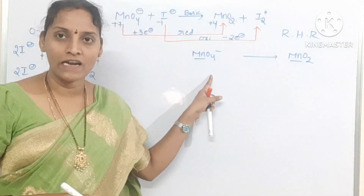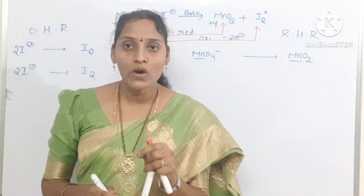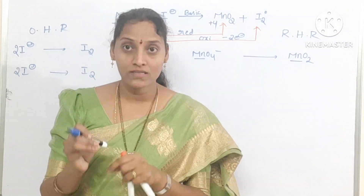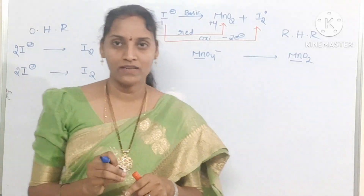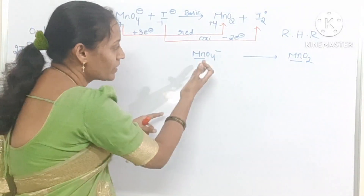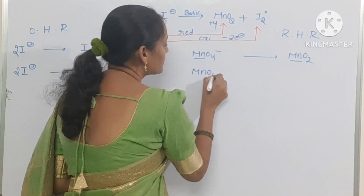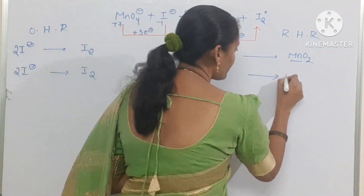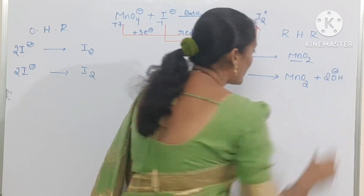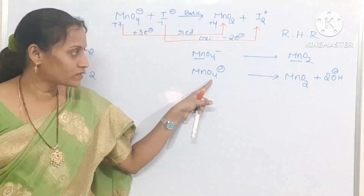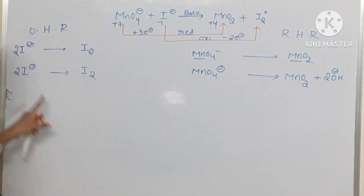In the oxidation half reaction, there are no oxygen atoms, so write it as is: 2I⁻ → I2. But in the reduction half reaction, there are 4 oxygen atoms on the left and only 2 on the right. Since we are in basic medium, you should add OH⁻ ions to the side where oxygen is less. So, add 2 OH⁻ ions to the right side to balance the oxygen atoms.